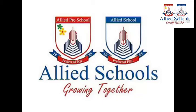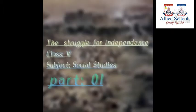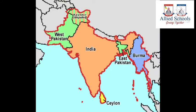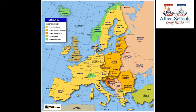Assalamu alaikum. Allied School Orangi Comprehensive Campus. Today in the history of Pakistan, our topic is the struggle for independence. Students, here is a world map on which Europe and the Indian subcontinent is shown here in orange.